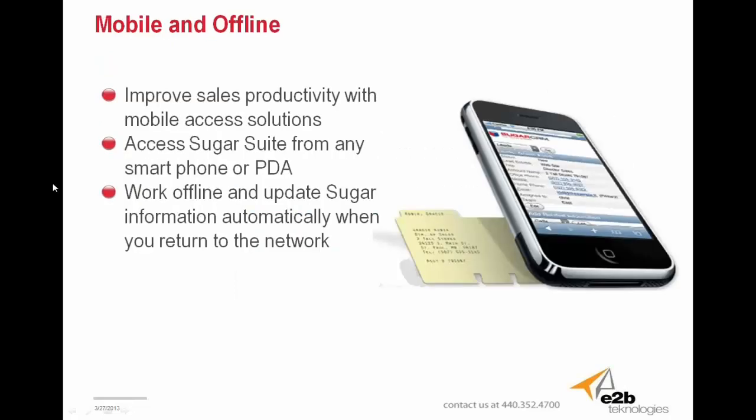For mobile users, Sugar's mobile app provides options for any smartphone or tablet user. Sales reps can look up information quickly while on the go and instantly send emails, make calls, or look at maps with just a tap of a button within the Sugar mobile application. Sugar mobile also has an offline option for sales reps that might not get internet service in particular areas, which will then update the inputted Sugar information automatically when the user returns to an internet network.